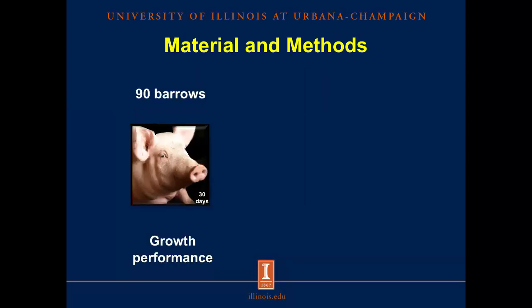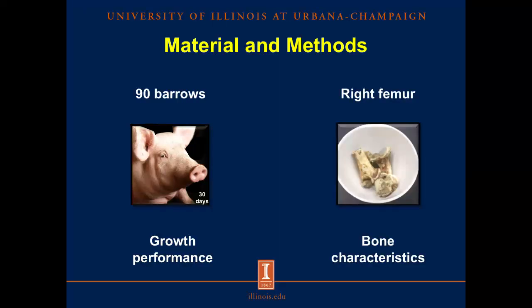We fed these 15 diets to 90 barrows, for a total of 6 replicate pigs per diet, for 30 days. Using initial and final body weight as well as the amount of feed provided, we calculated growth performance parameters. On day 31, pigs were harvested and the right femur was removed, defatted, dried, and ashed to measure bone characteristics.